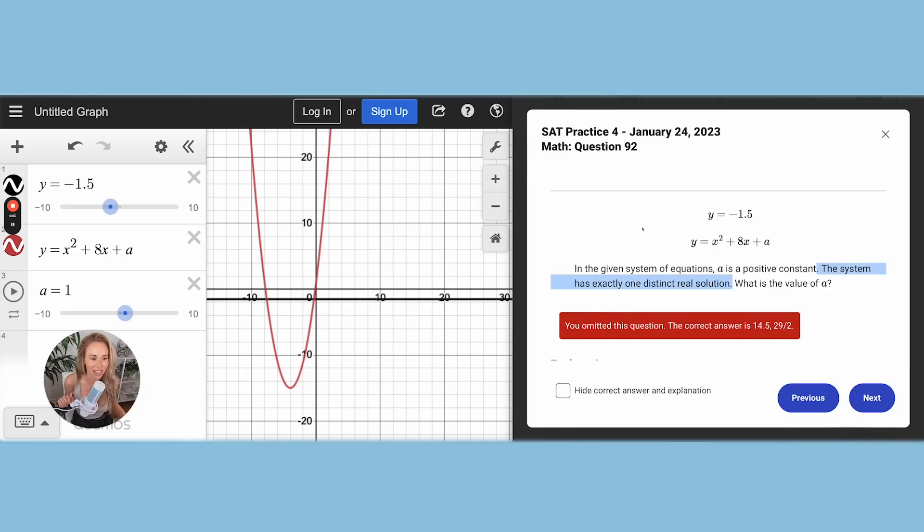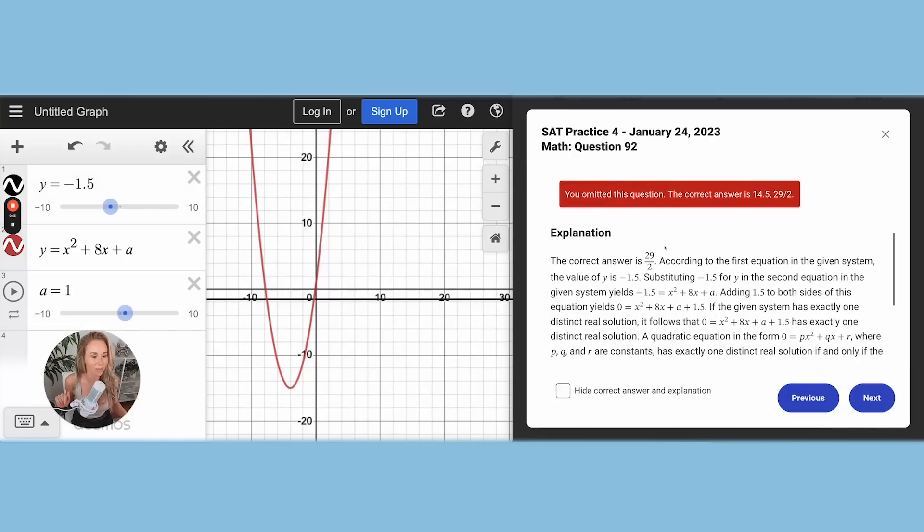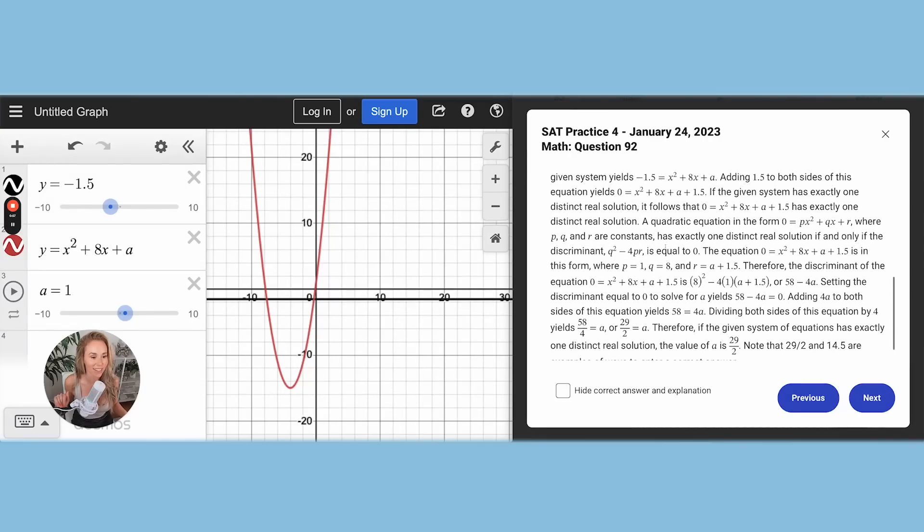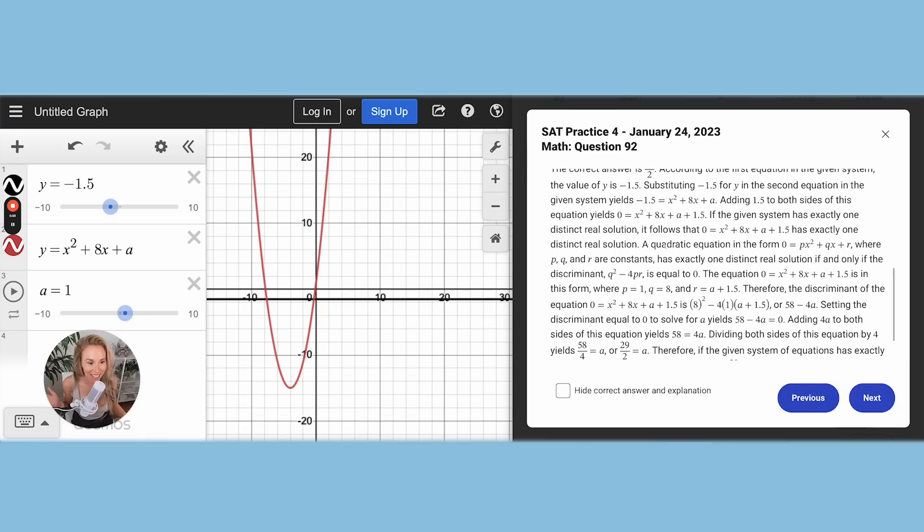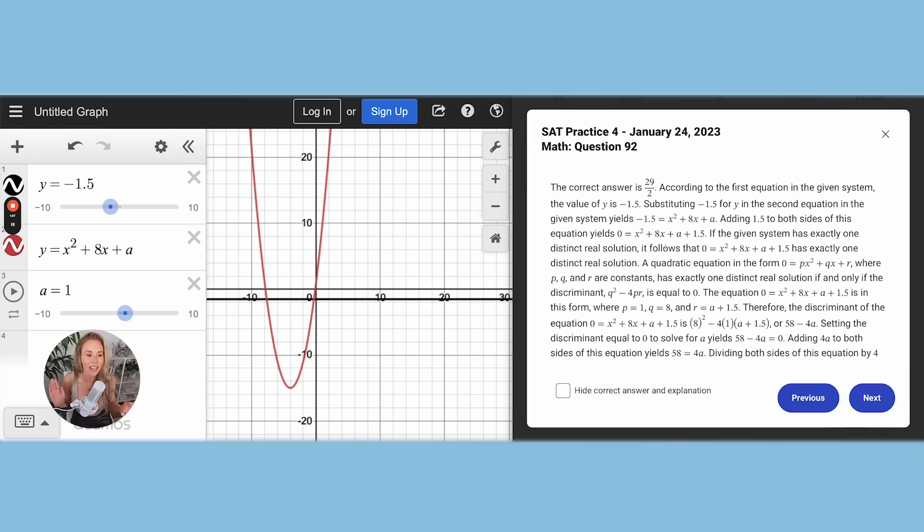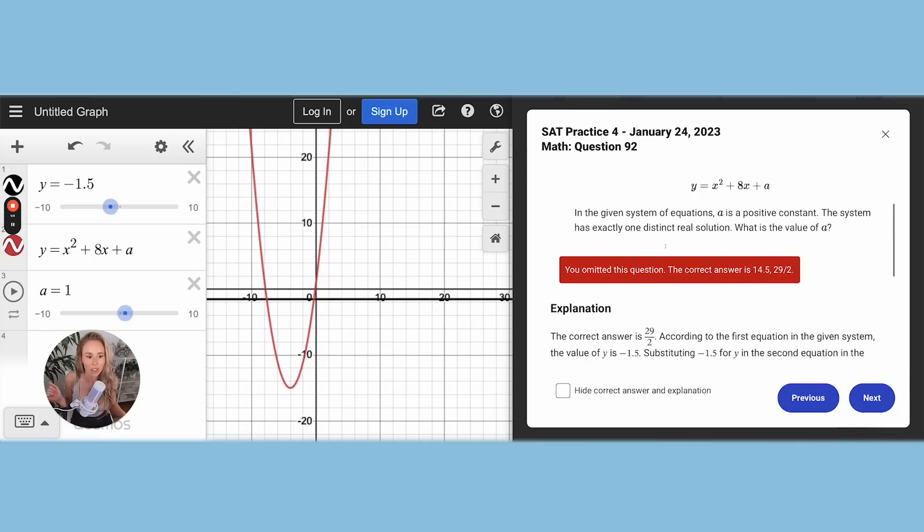You guys, take a look at this. Look at this answer explanation from College Board. Like, are you kidding me? College Board, no. This is just so ridiculous. And honestly, solving these graphically is way better than solving them algebraically.